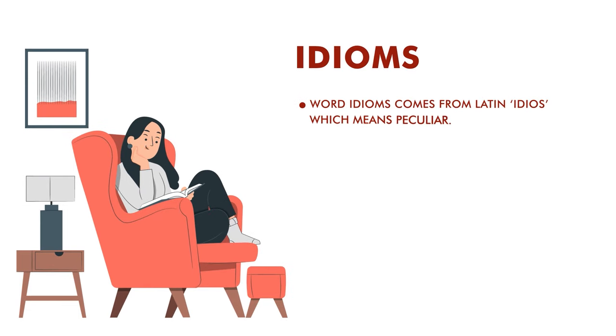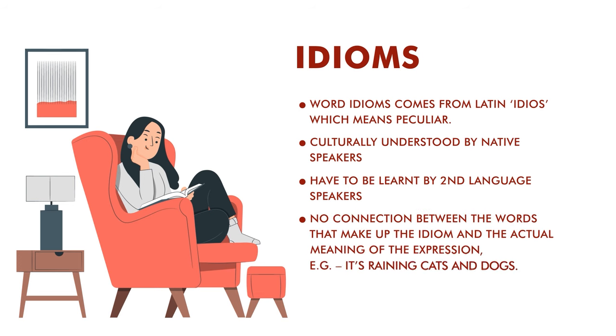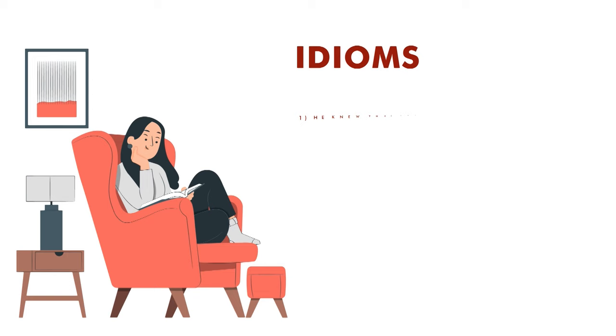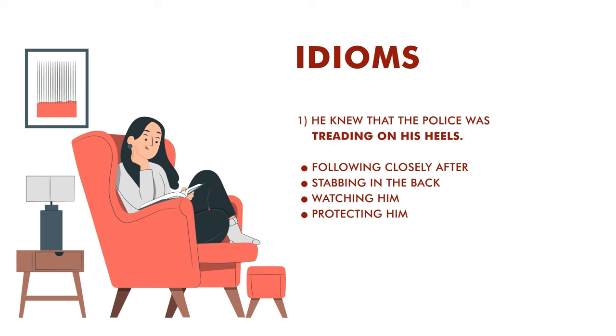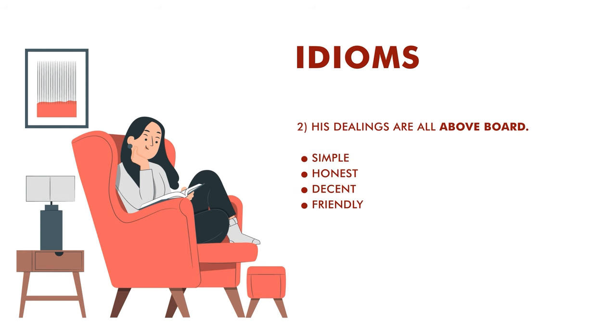Idioms are culturally understood by native speakers but have to be learned by second language speakers. The interesting thing is that there is no connection between the words that make up the idiom and the actual meaning of the expression. For example, 'it's raining cats and dogs' means it's raining heavily — no connection with cats and dogs. 'He knew that the police was treading on his heel' means following closely after. 'His dealings are all above board' — 'above' and 'board' have nothing to do with honesty, but here it means honest.